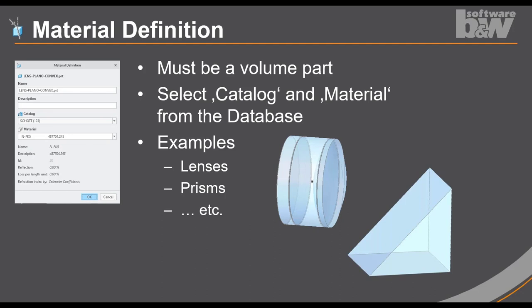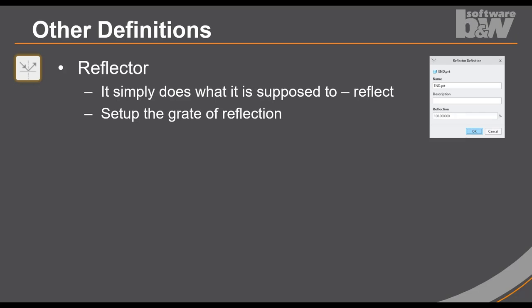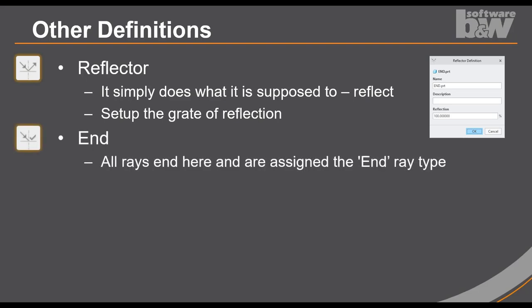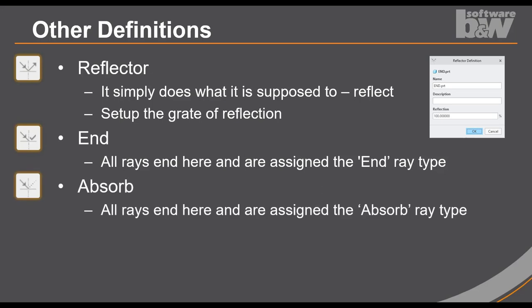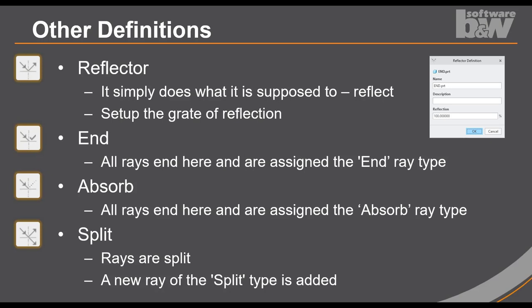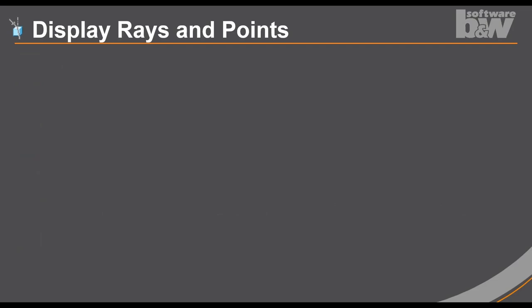Some examples for materials, or lenses, or prisms, and so on. So other element definitions are reflectors. The reflector simply does what it's supposed to. You should reflect the ray. You can set up the grade of reflection in the dialog. And then you can select the end surface or end part. Each ray we hit on this element will assign the n-ray type, and we have absorbing elements and splitting element. For the splitting element, the ray will be split into two rays, and a new ray with a type split will be added to the array list.